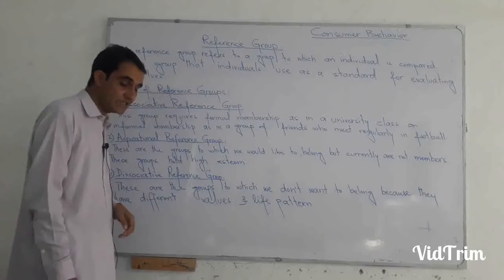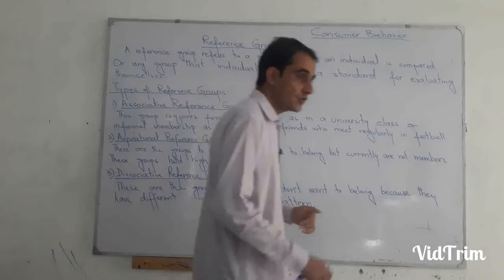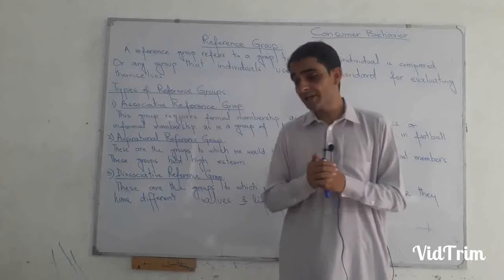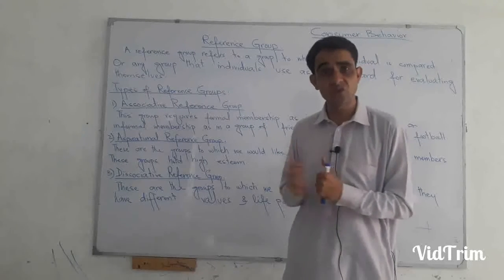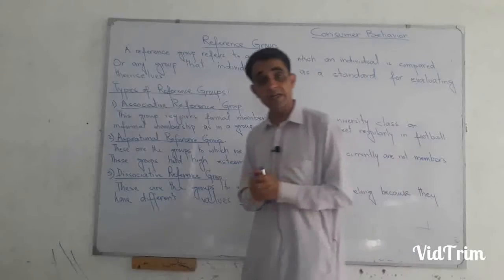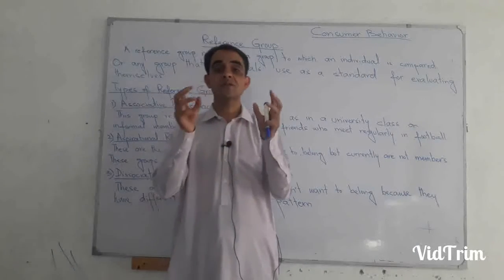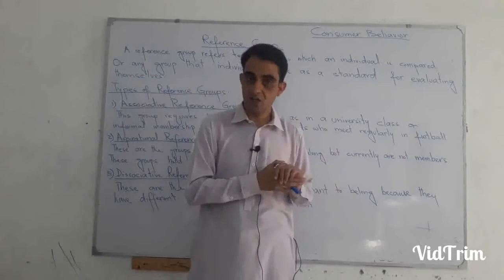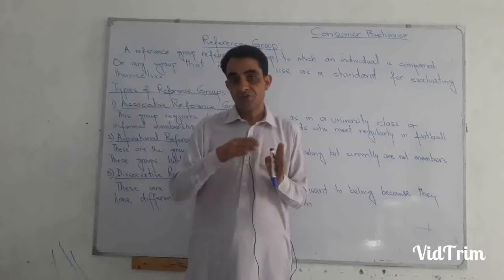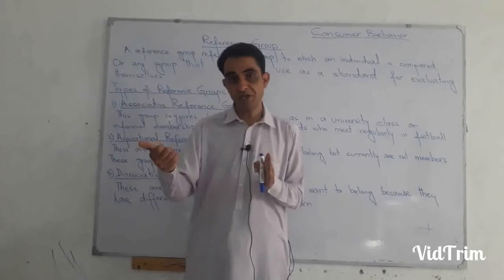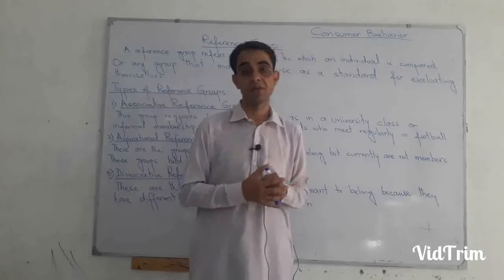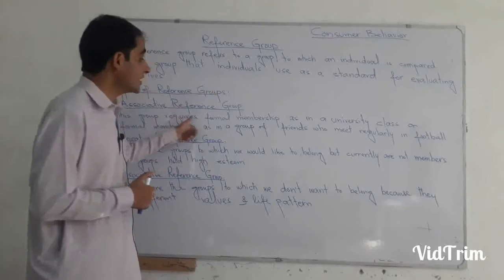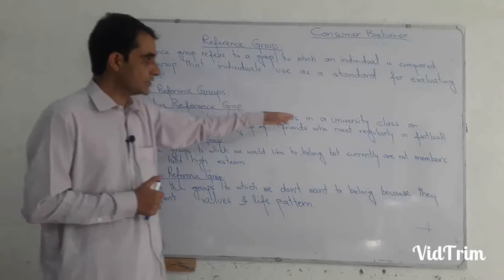There are some types of reference groups. Number one is the associative reference group. The associative reference group is that group to which we belong, formally or informally. Sometimes it needs formal membership, as in the case of a formal reference group — for example, your class group, your semester group, your football club or team. Somewhere you need formal membership and somewhere you need informal membership. This group requires formal membership, as in a university class.